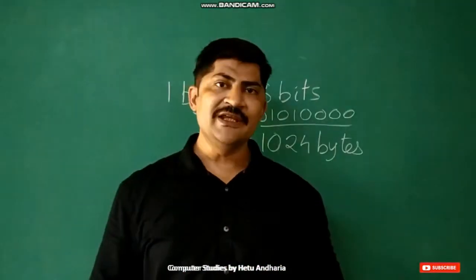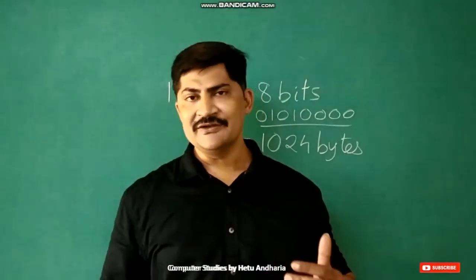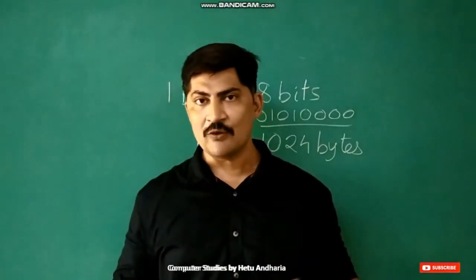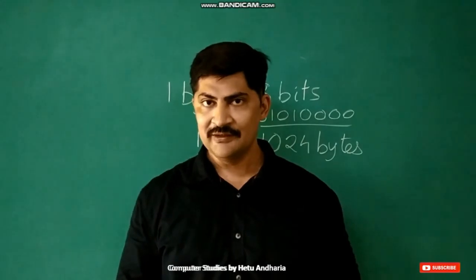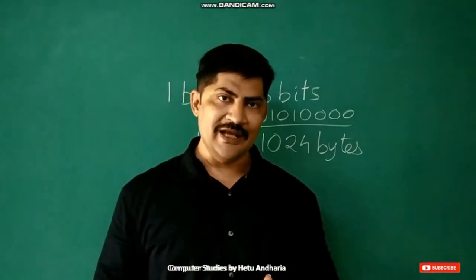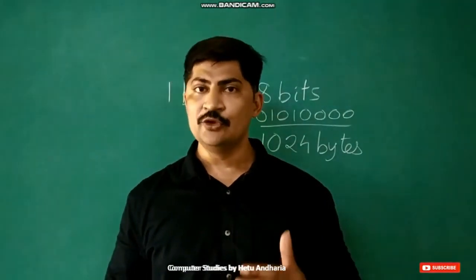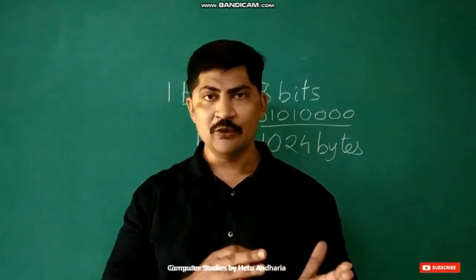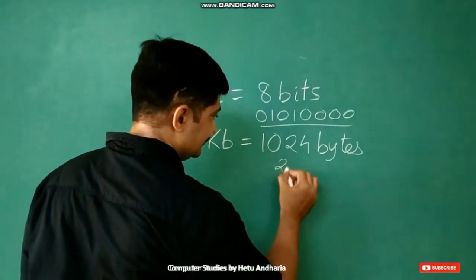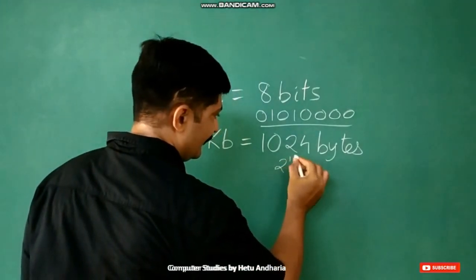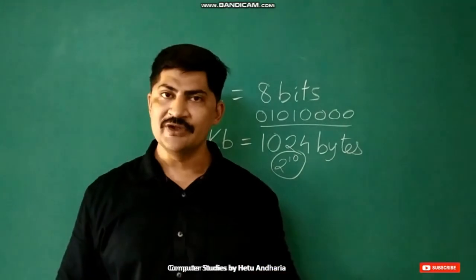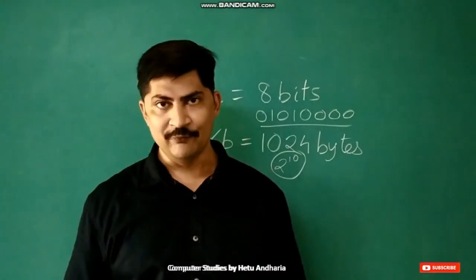You may be thinking why it is not 1000, why it is 1024 — it is an awkward figure. The reason is that computer understands binary language, so the base is 2 (0 or 1). Therefore, 2 raised to the power 10 forms 1024.